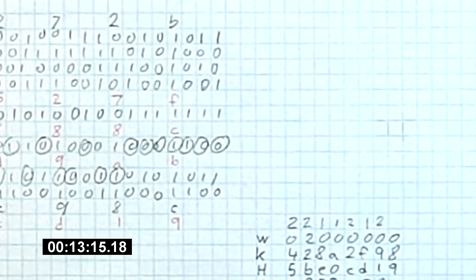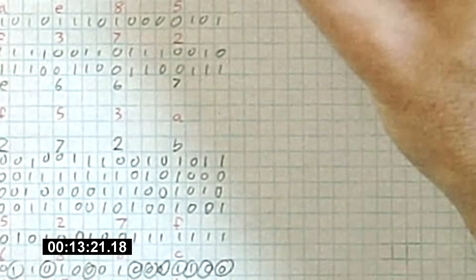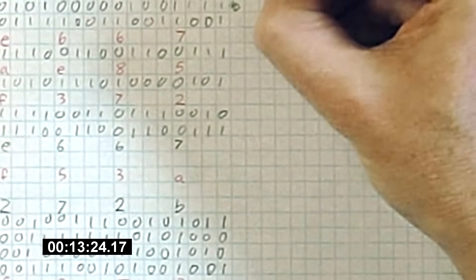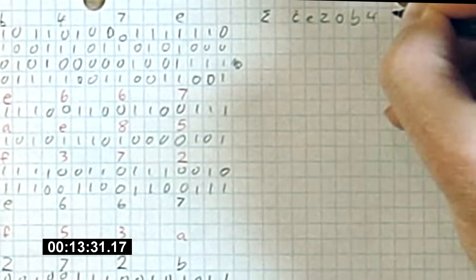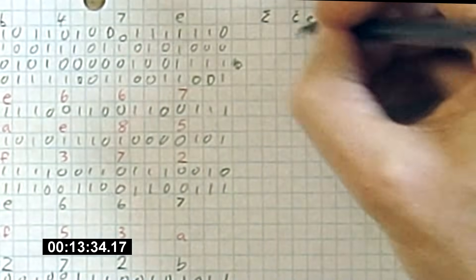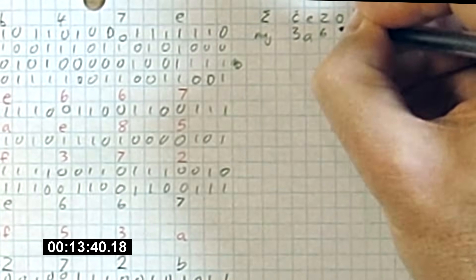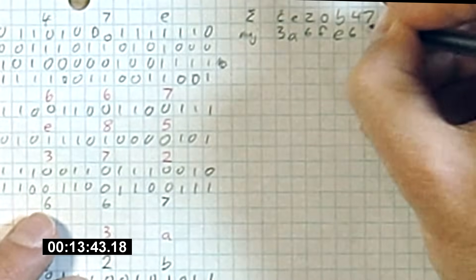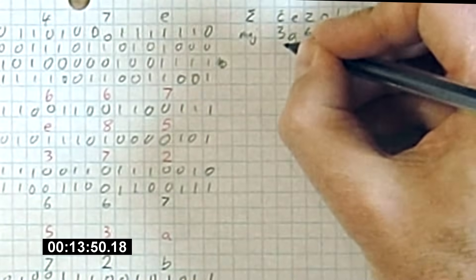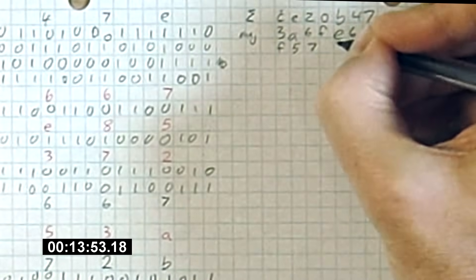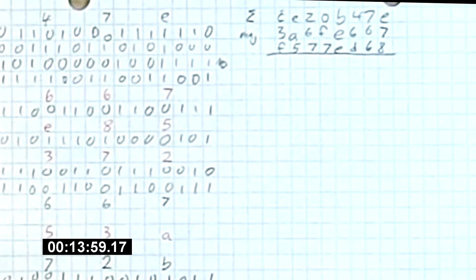Next we compute our new A value by adding three things: the sigma sum of A we computed earlier, which was CE20B47E; the majority value calculated from A, B, and C, which was 3A6FE667; and our first sum, F577ED68. We add these up in hexadecimal to get our new A value.